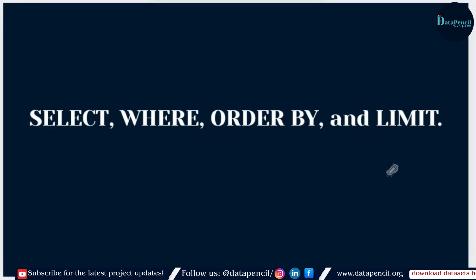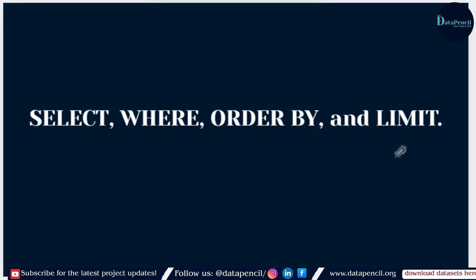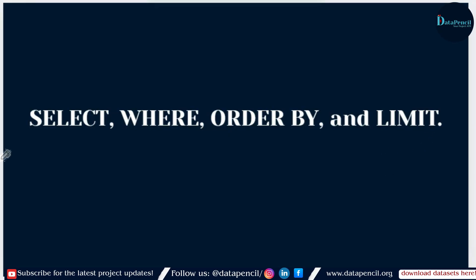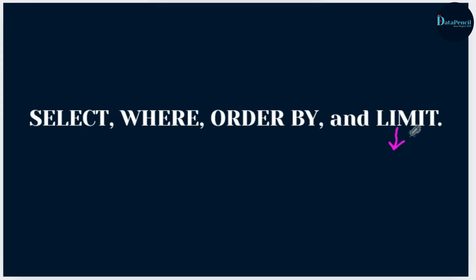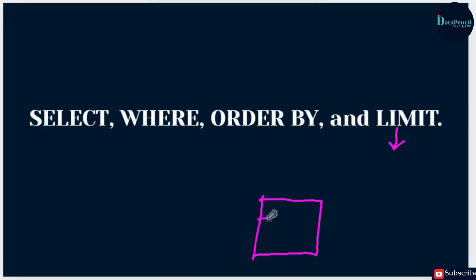We will discuss them one by one in a quick manner. Before we begin, please don't forget to switch on your analytical brain. Now, SELECT, WHERE, ORDER BY, and LIMIT — we will start with LIMIT first. As we saw yesterday, there were so many tables, columns, and rows. If we want to see output involving only particular rows and don't want to see all thousand rows, we only want ten rows.